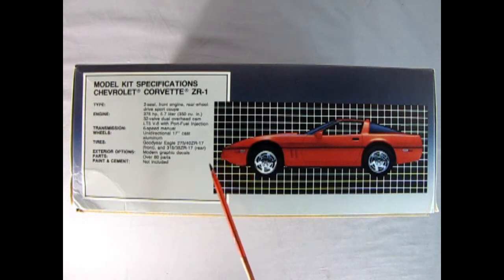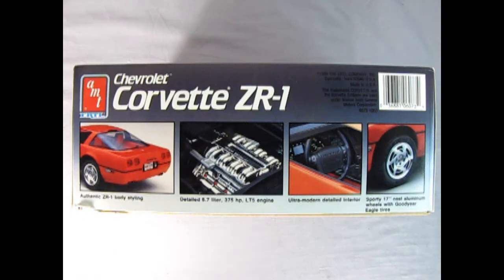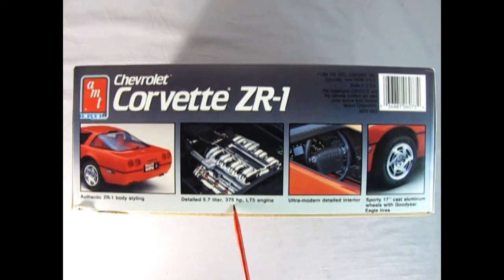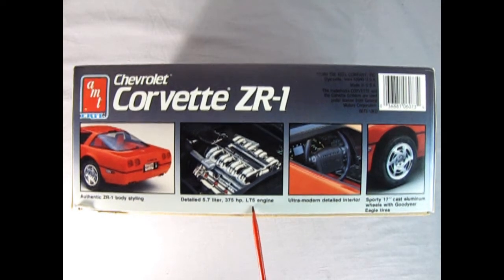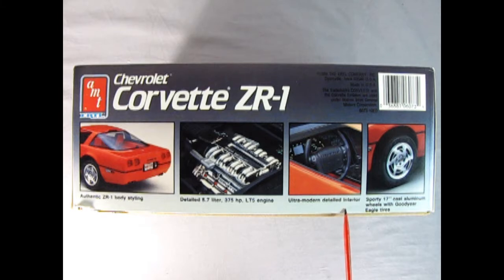Modern graphic decals, over 80 parts, and paint and cement is not included. On this side of the box we get four wonderful pictures. This is the authentic ZR1 body styling in the back here. Detailed 5.7 liter 375 horsepower LT5 engine. Ultra modern detailed interior. Sporty 17 inch cast aluminum wheels with Goodyear Eagle tires.